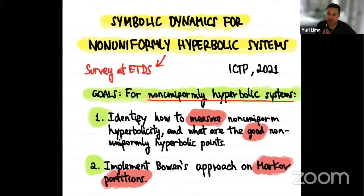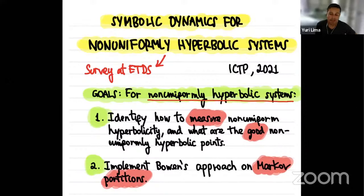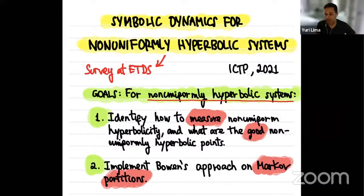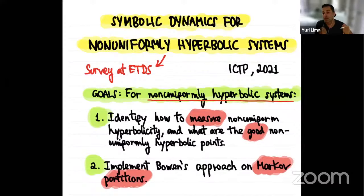Markov partitions, at least in the way we understand them today, started with two works in the 1960s: one by Adler and Weiss, and the other by Sinai. Both treated uniformly hyperbolic systems. Later, Bowen came with a different approach covering Axiom A diffeomorphisms, and the niceness of his approach is that it is more suitable to generalizations. That is why Sarig was able to use Bowen's approach and apply it to the non-uniformly hyperbolic situation.